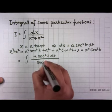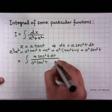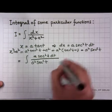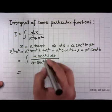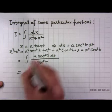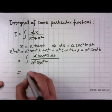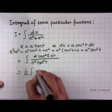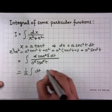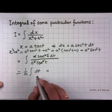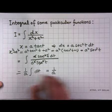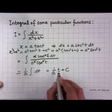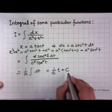We get a²·sec²(t) in the denominator and dx = a·sec²(t)dt in the numerator. The two sec²(t) terms cancel, and a cancels with a, leaving 1/a outside the integral. This can be written as (1/a)∫dt. It has been converted into a very simple form: (1/a)·t + C.